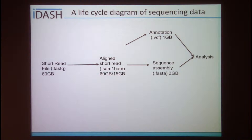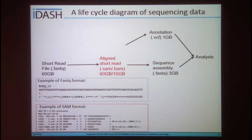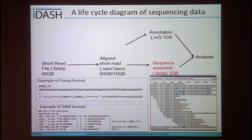Here is the life cycle diagram of sequencing data. From the sequencer, we can generate a short-read file in FastQ format. In FastQ format, we have a sequence ID, raw sequence reads, and some quality values, as shown in this example. By aligning short reads against a reference, we can generate aligned short reads in SAM or BAM format. BAM file is a binary format of SAM file. In a SAM file, each alignment line has 11 mandatory fields for essential alignment information and some optional fields. Finally, by using annotation and sequence assembly, one can generate VCF and FastA format for genomic analysis.